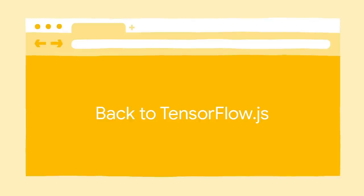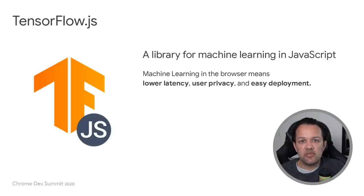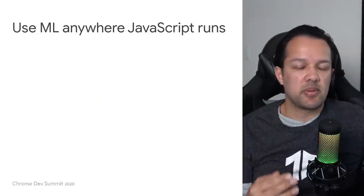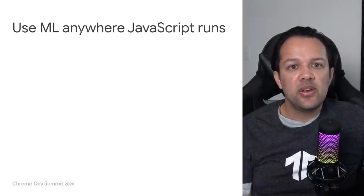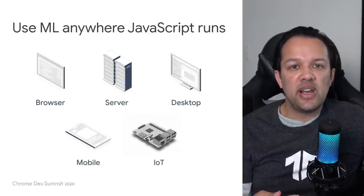So back to TensorFlow.js. Now we understand what's going on behind the scenes, you'll be pleased to know that TensorFlow.js does a lot of the hard stuff for us. TensorFlow.js is a machine learning library written for JavaScript. Doing machine learning in the browser has several advantages, such as lower latency as no server is involved, user privacy as the data stays on device, and super easy deployment because anyone with a web browser can use it. You can use machine learning anywhere JavaScript can run — the web browser, server side, desktop, mobile, and even IoT devices.